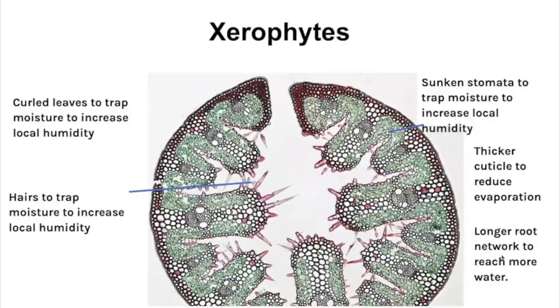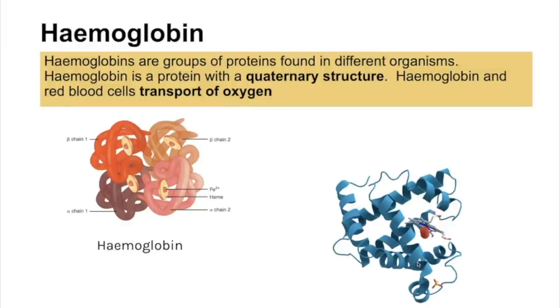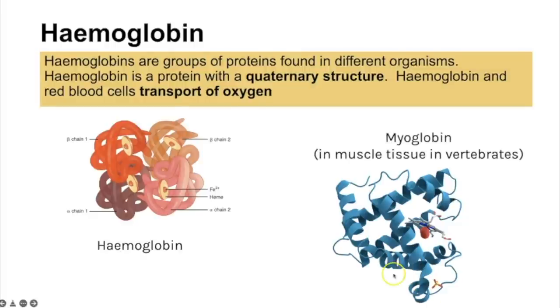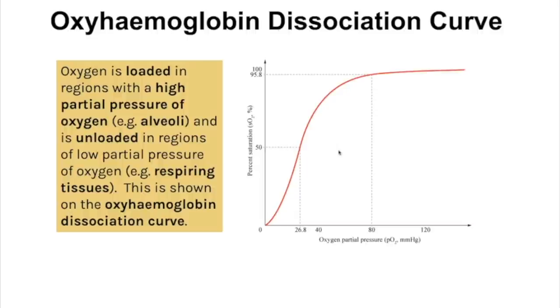Haemoglobin is involved in the mass transport of oxygen around the body and is an example of a quaternary structure protein, made up of four polypeptide chains. There are different types of haemoglobin — one is myoglobin, found in vertebrate muscle tissue and also in fetuses. The oxyhaemoglobin dissociation curve shows how haemoglobin behaves under different conditions.